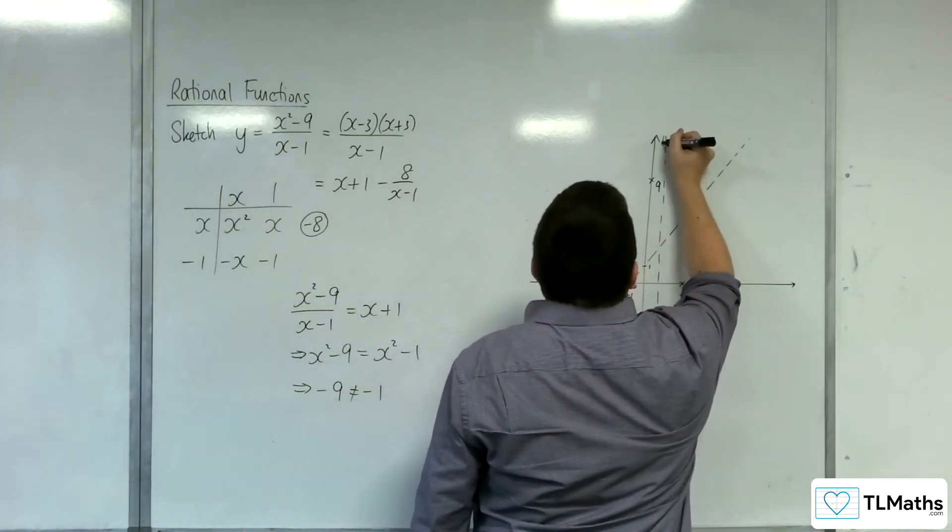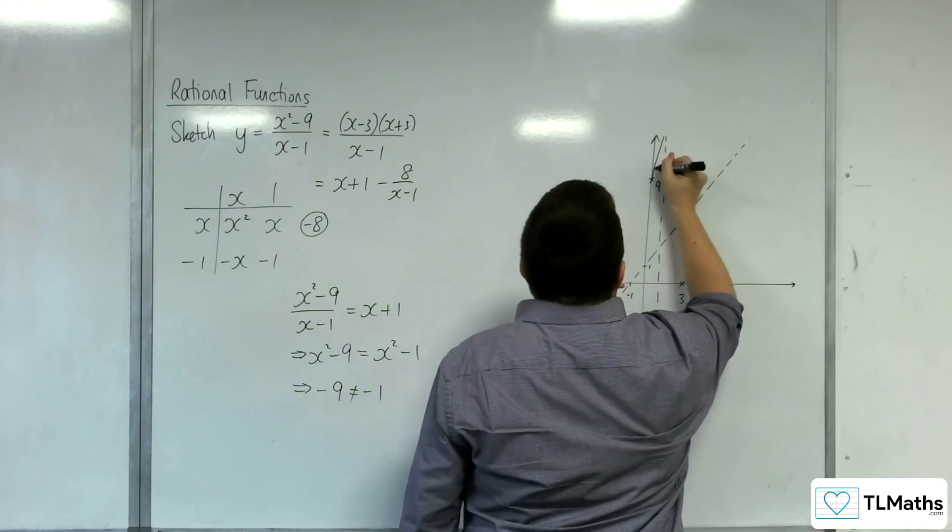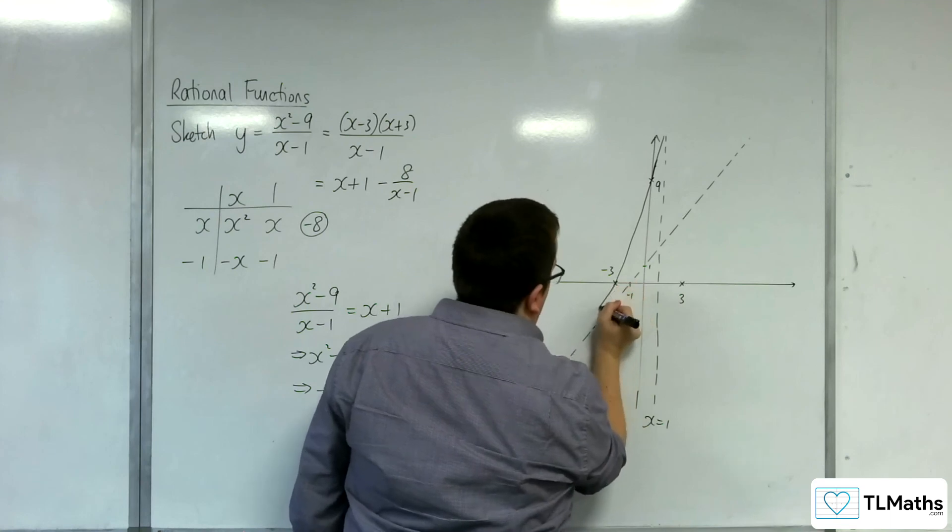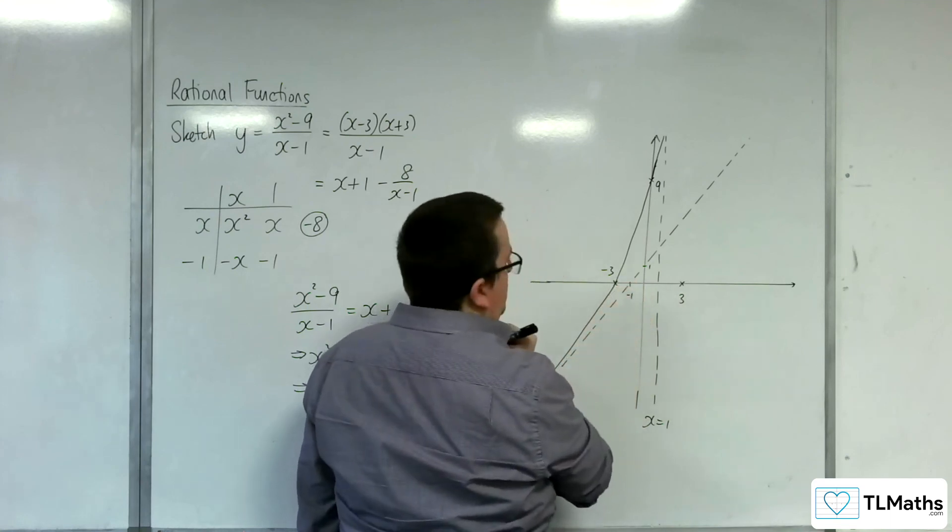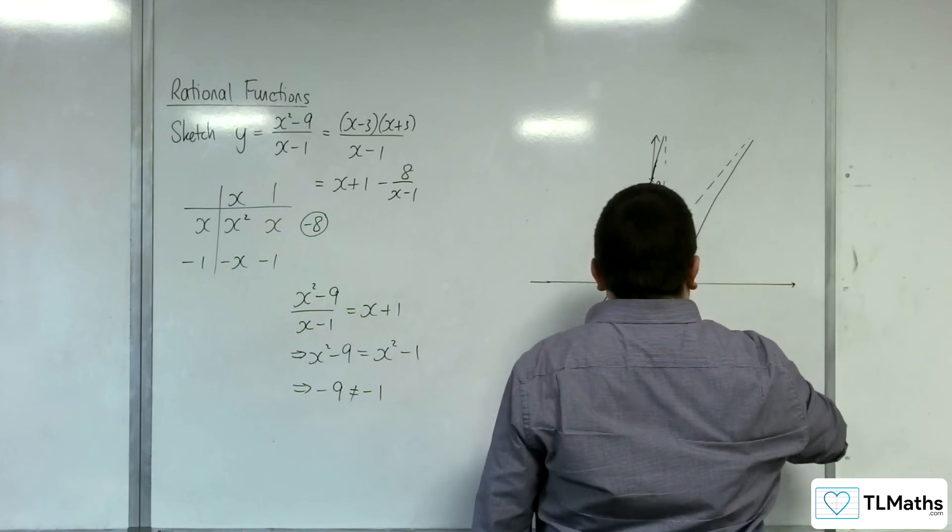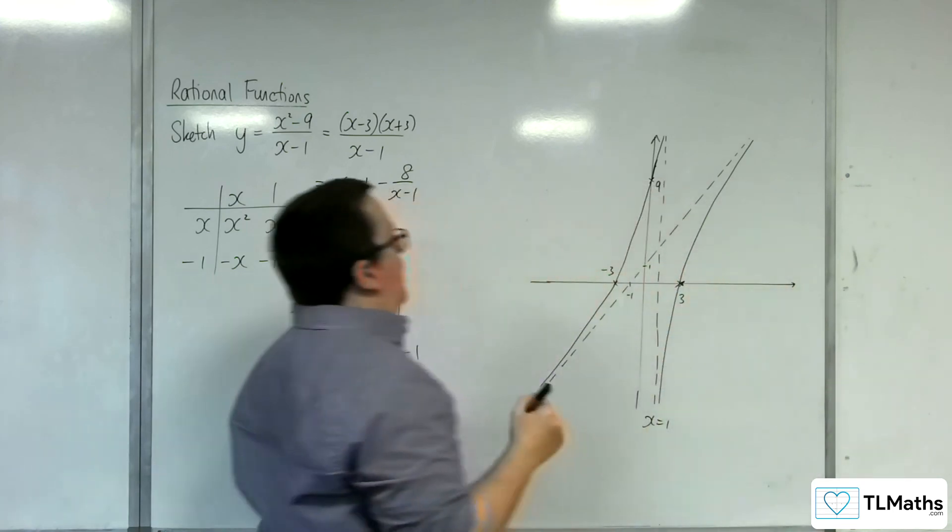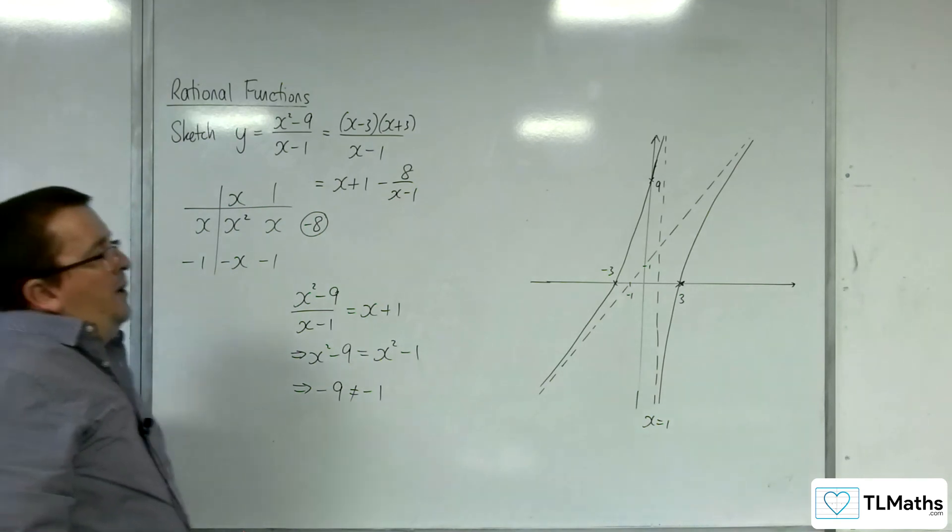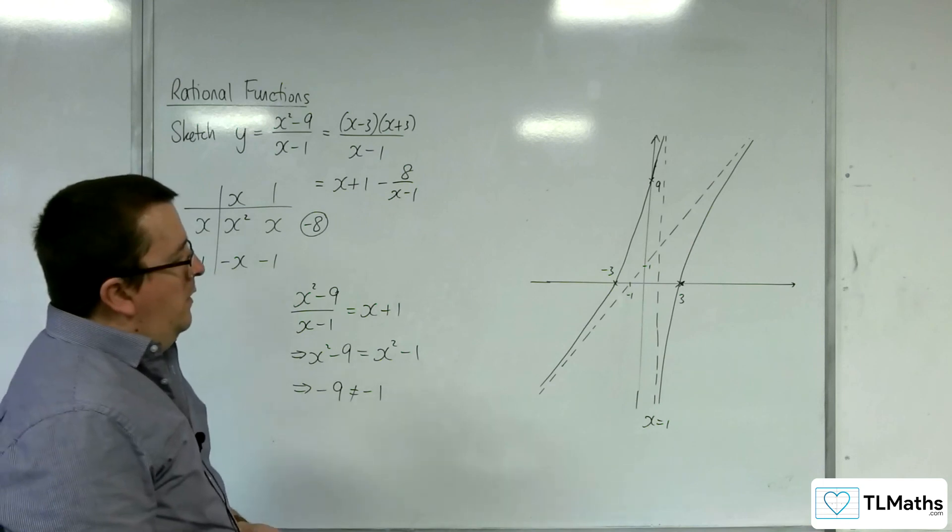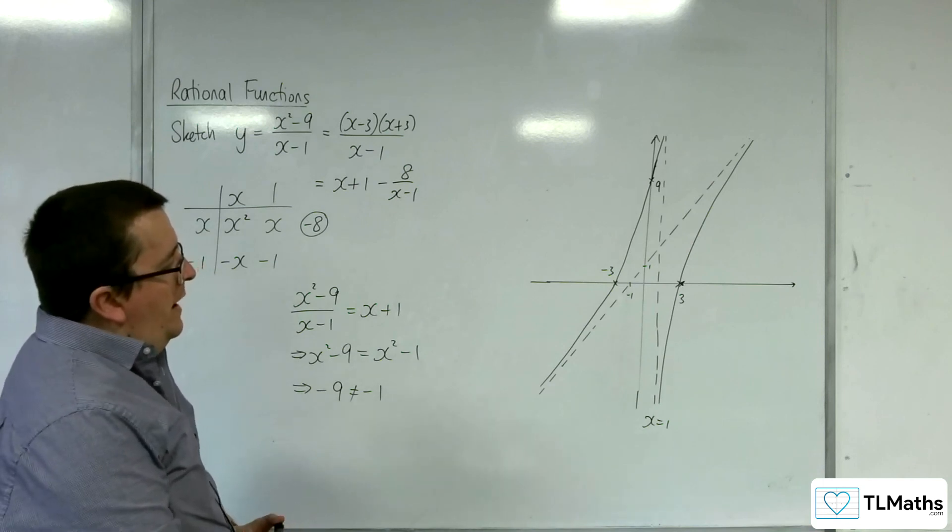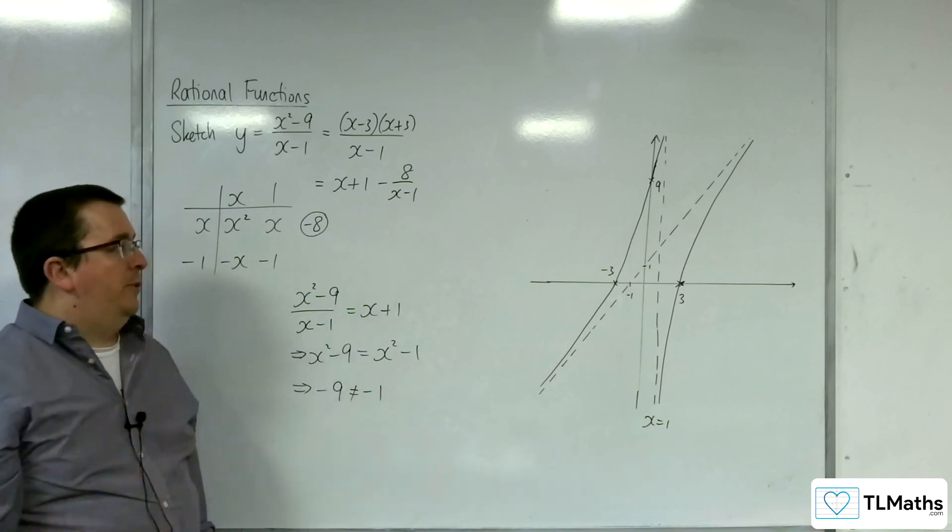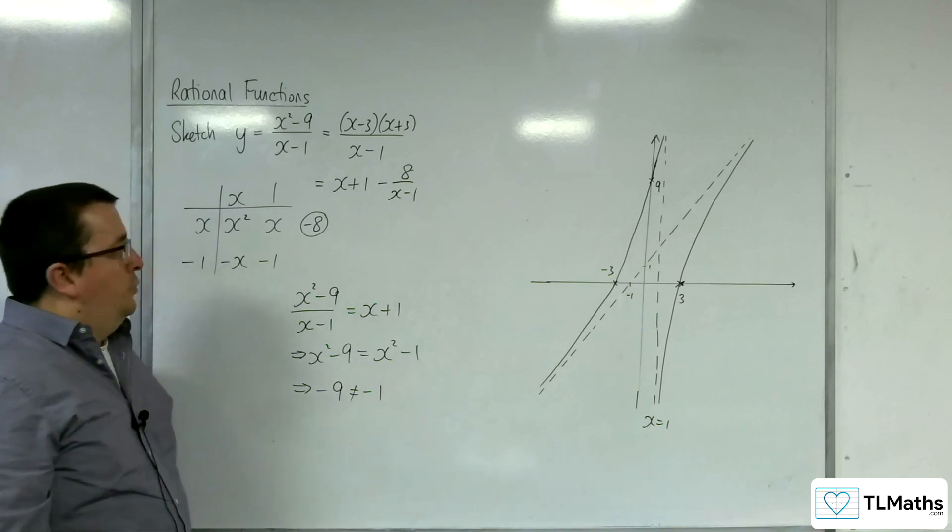So we must be coming down from here through 9. That wasn't particularly good. Through minus 3, and then 10 towards the asymptote. And through the 3, and down that way. So it's a particularly strange looking graph, this one. But that is what the curve must look like using all the techniques that we have available to us to show that.